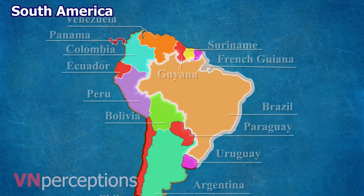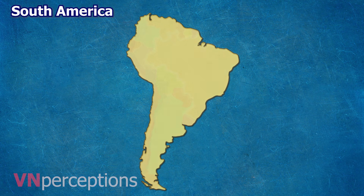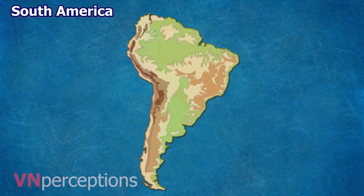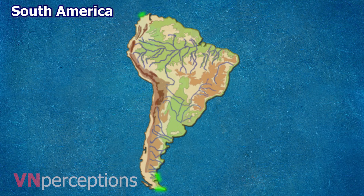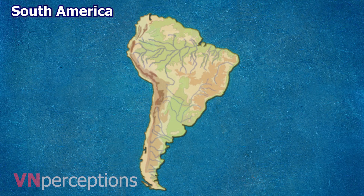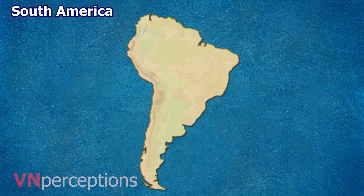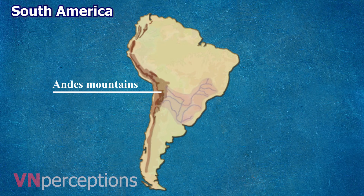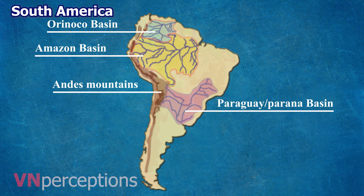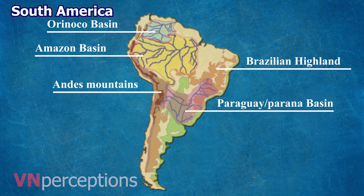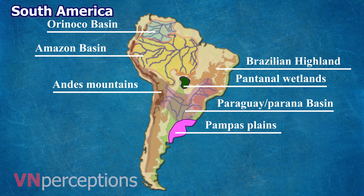South America can be divided into three physical regions: mountains and highlands, river basins, and coastal plains. The major geographical features seen in South America are the Andes Mountains, river basins, highlands, Pampas Plain, Pantanal wetlands, and Patagonia.